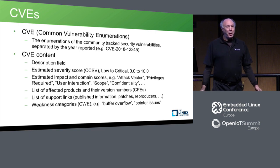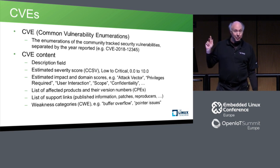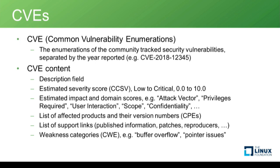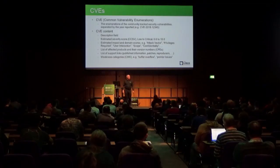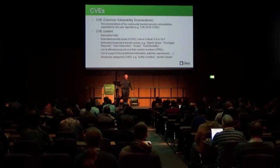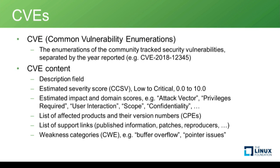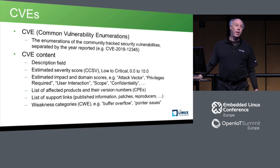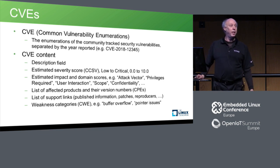I assume everyone knows what a CVE is. A CVE record has a description field, severity score, attack vector with domain scores, a list of affected products which is the CPE list, a list of support links with helpful documents, hopefully patches, reproducers, and support material, and also a category for the weakness. Just for completeness, that is what a CVE record is — we'll have to keep that in mind as we analyze them.